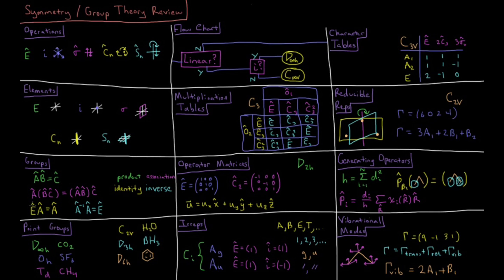They have an identity, an operation that leaves another operation unchanged, and all operations have an inverse, such that if you apply the inverse to an operation, the resulting operation is identity.